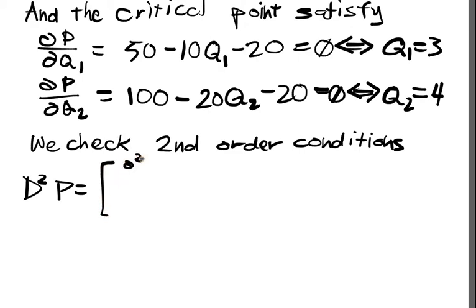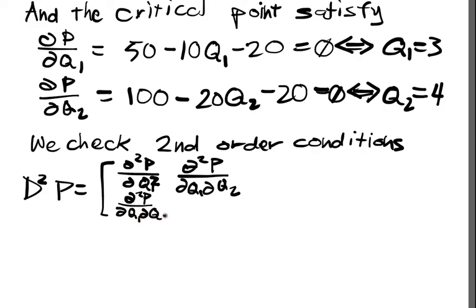So the Hessian is going to be ∂²P/∂Q1², ∂²P/∂Q1∂Q2, ∂²P/∂Q2∂Q1, and ∂²P/∂Q2². And of course we can compute these...